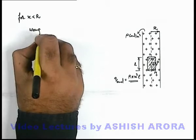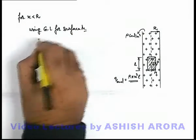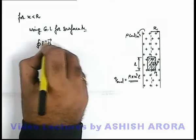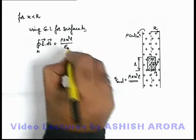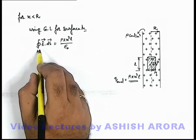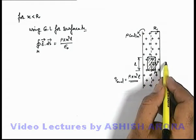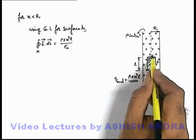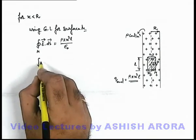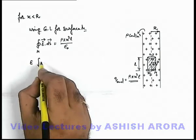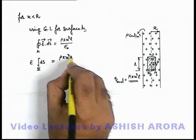Using Gauss's law for surface M, we can write the closed surface integral of E·dS equal to the enclosed charge divided by ε₀, which is ρπx²l / ε₀. For surface M split into 3 parts, the only integral that survives is through the lateral surface of the cylindrical Gaussian surface, because E·dS for sections 1 and 3 vanishes for the same reasons discussed previously. Due to uniformity we take E outside the integral: E × ∫dS for the lateral surface equals ρπx²l / ε₀.